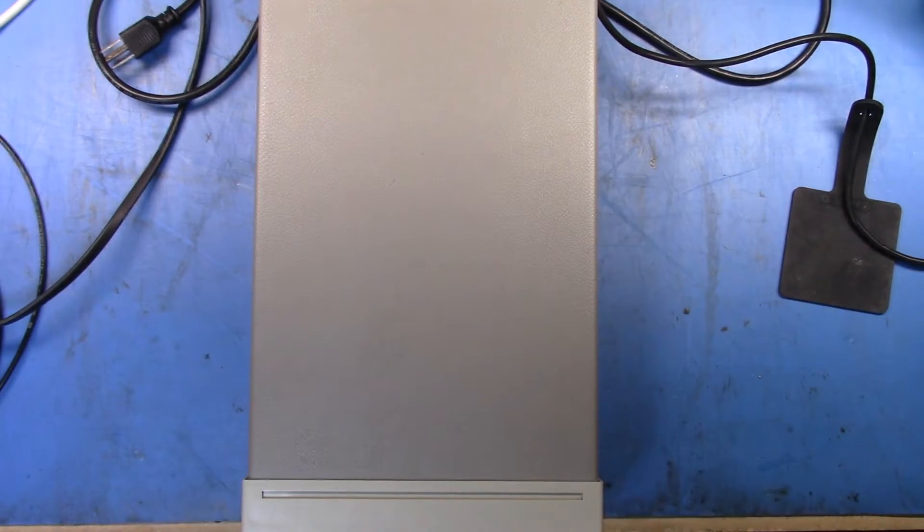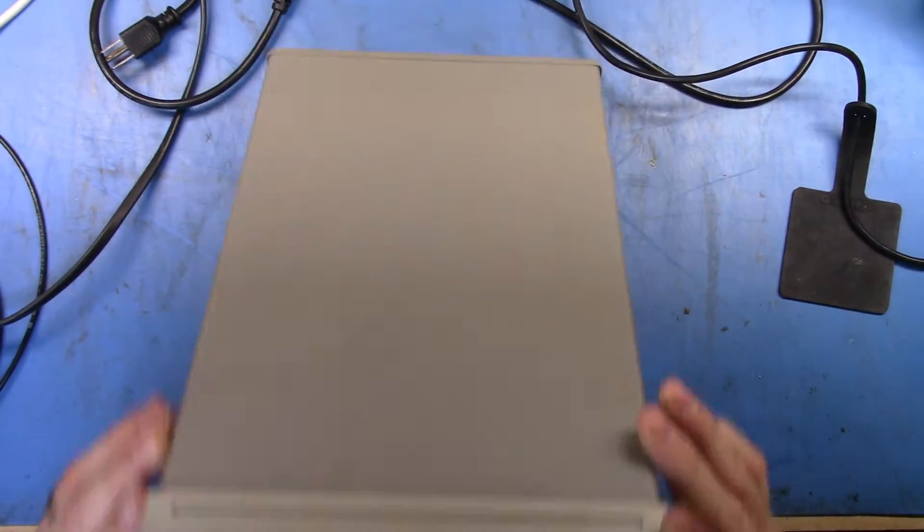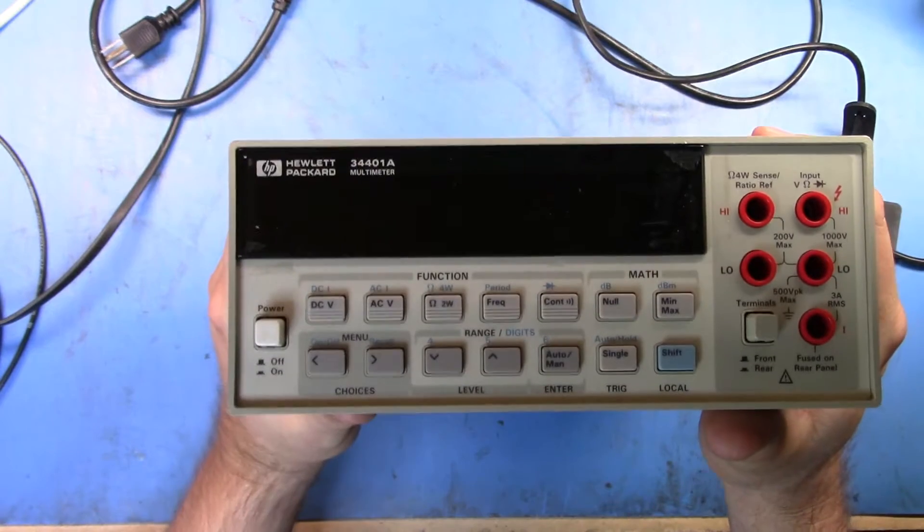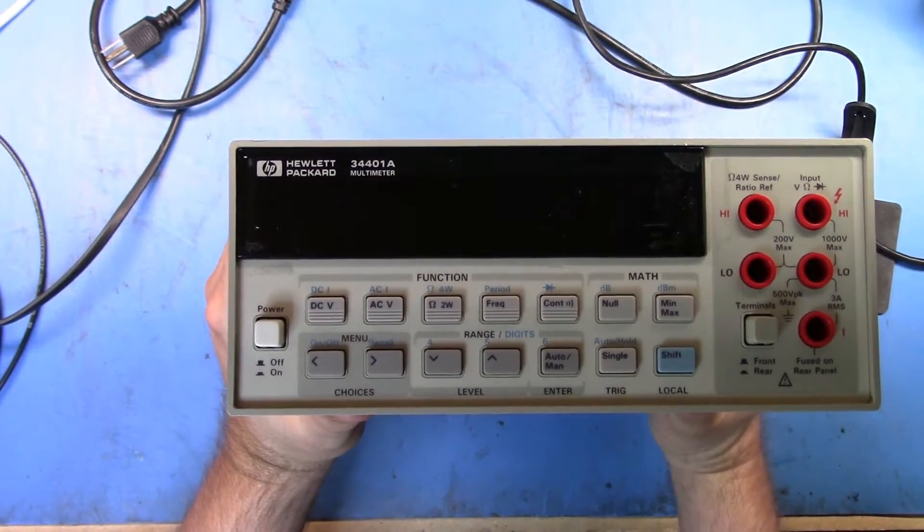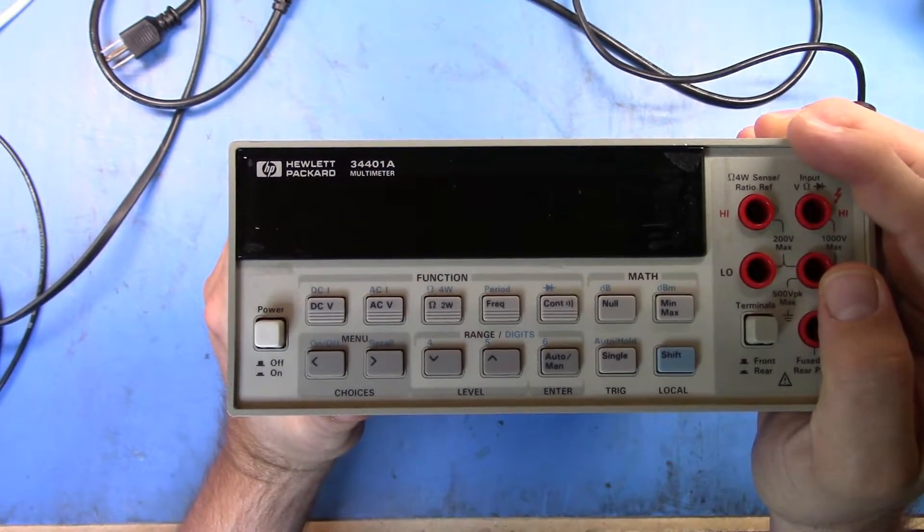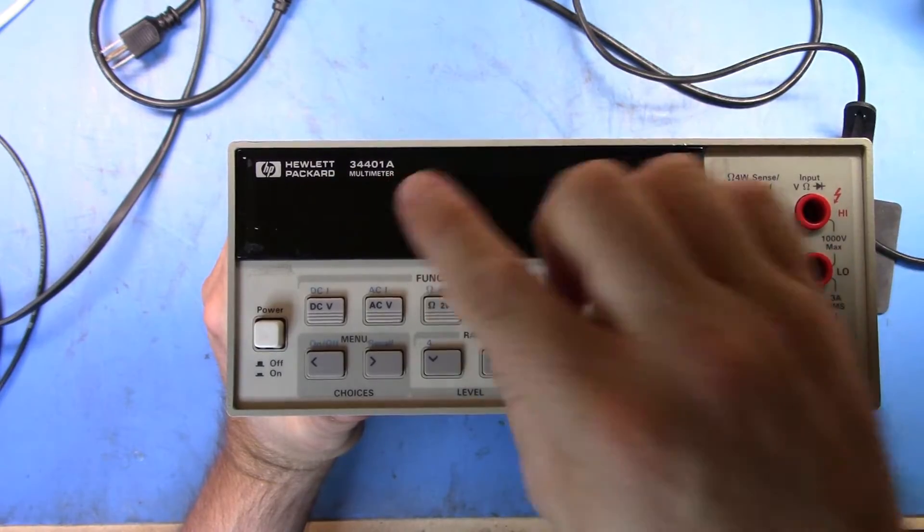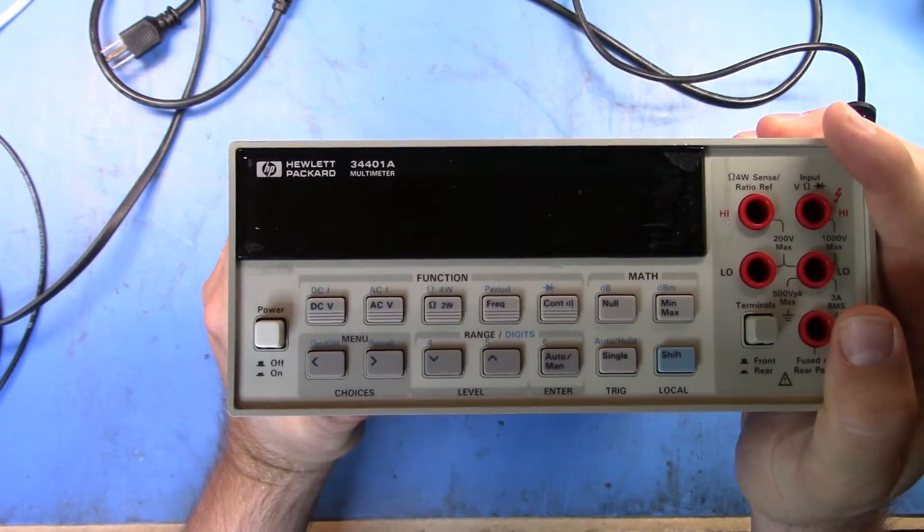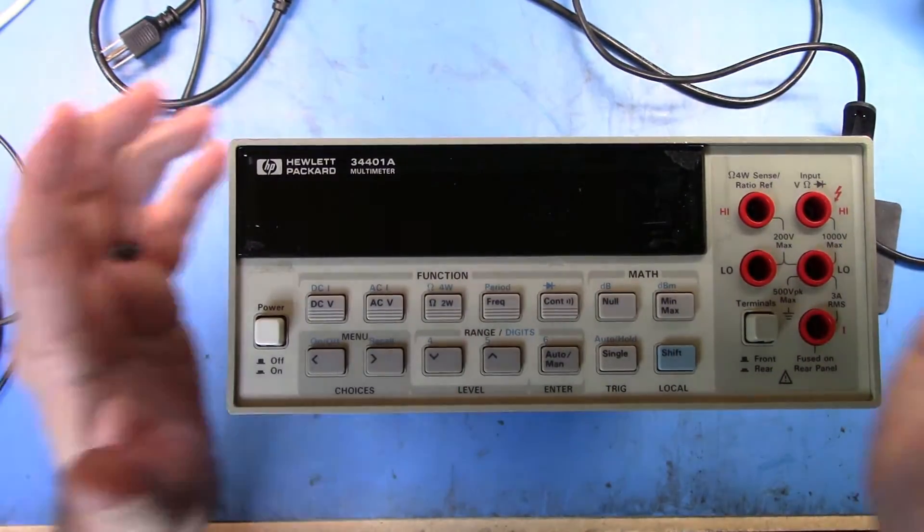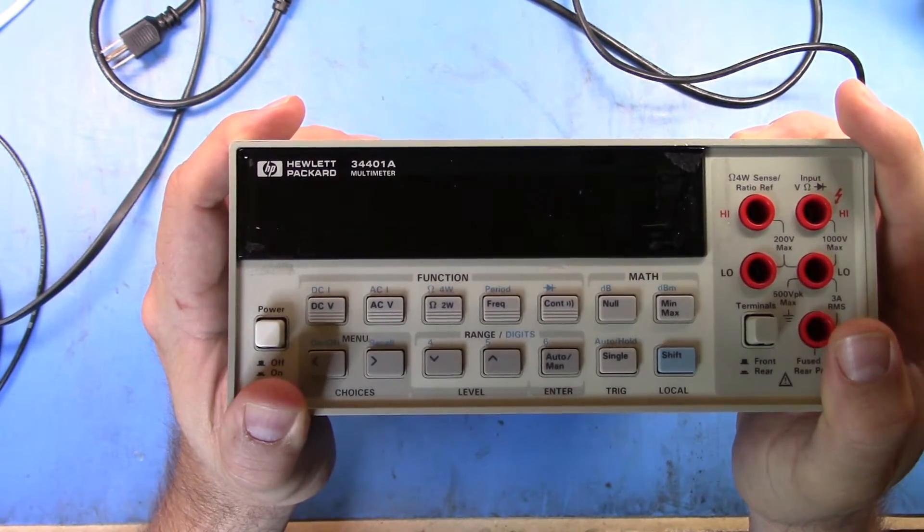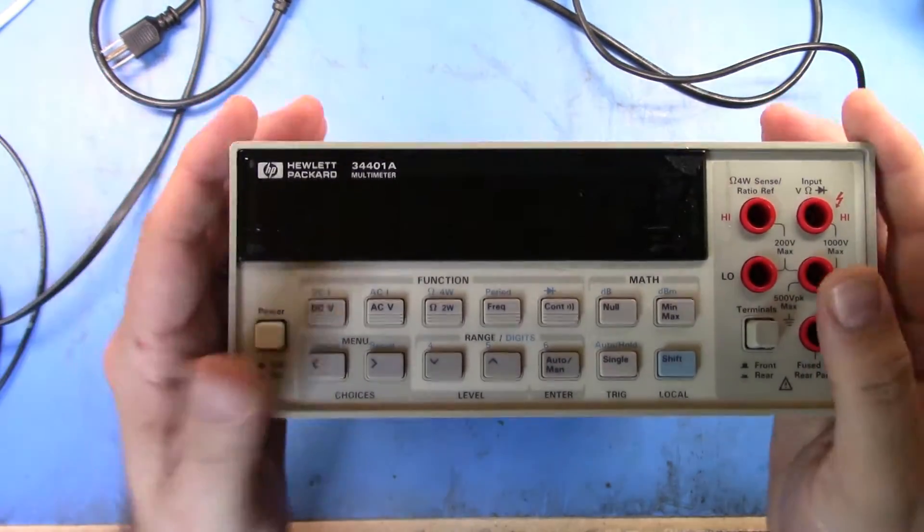Well, good afternoon. I've got another short item here. This is a classic old, well it's not classic, it's a reasonably modern meter, a 34401A, which is a Hewlett-Packard six and a half digit multimeter.